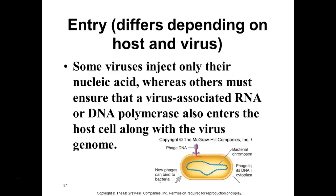Some viruses have the whole thing go in — endocytosed or fused with the membrane. Others must ensure the virus-associated DNA or RNA and any polymerases get introduced into the cell. For bacteria especially, the most common thing is injection — with that spaceship structure — where the nucleic acid, whether DNA or RNA, gets injected along with any needed enzymes: DNA or RNA polymerases necessary for replication and transcription.